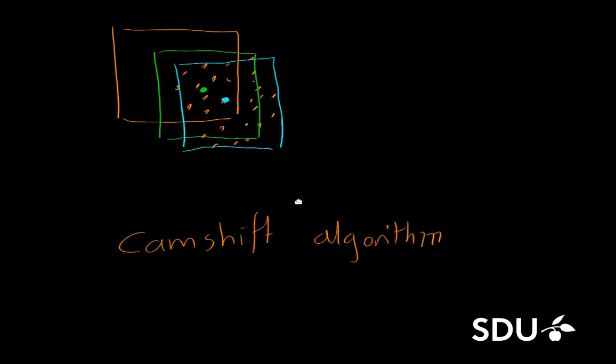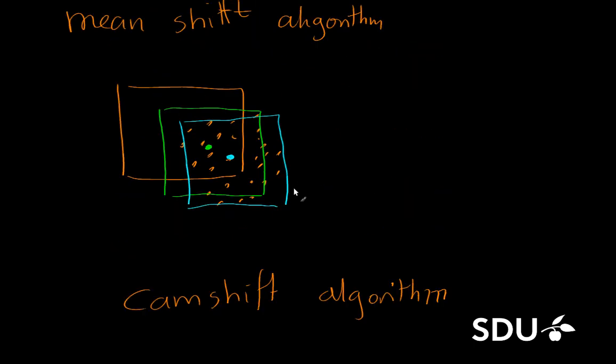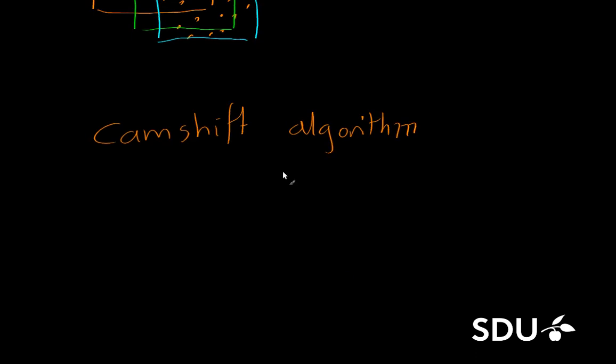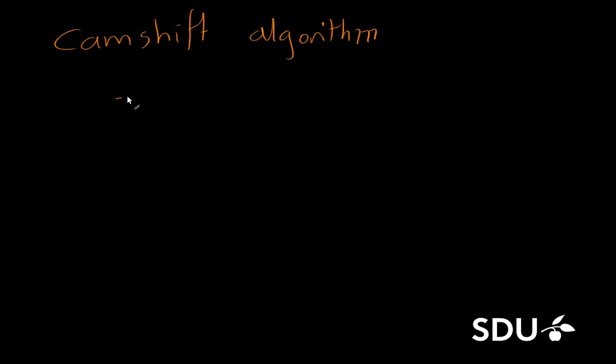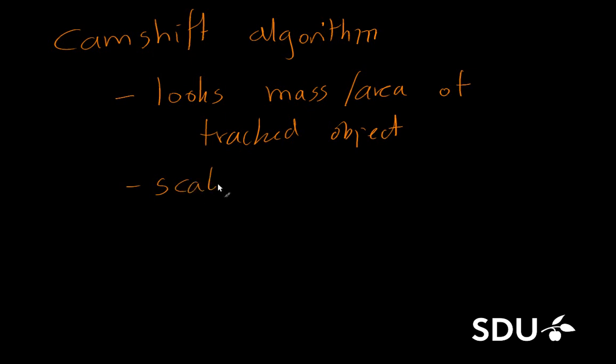And it has been more or less solved with an approach named the CAM shift algorithm. Which works more or less like the mean shift algorithm with one additional thing. And it looks at the mass or area of the tracked object. And based on that it actually scales the bounding box accordingly.